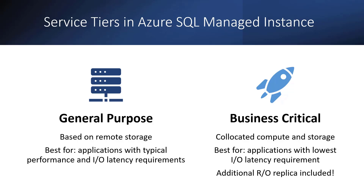The General Purpose service tier is based on remote storage and is best suited for applications with typical performance and high latency requirements, which is most apps. The Business Critical service tier is based on collocated compute and storage, using blazing fast local SSDs which deliver maximum performance and lowest possible latency — a unique offering on the market. It is best suited for applications with the lowest latency requirements and maximum data throughput in IOPS requirements. An additional read-only replica is also included in the price for the Business Critical service tier.